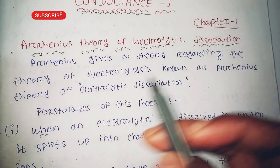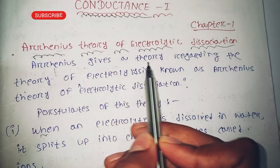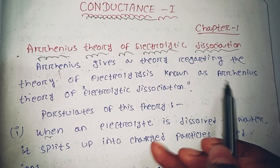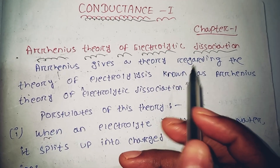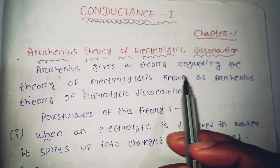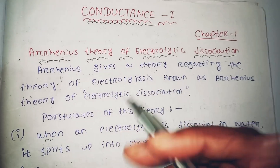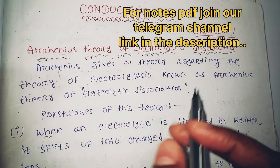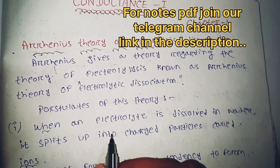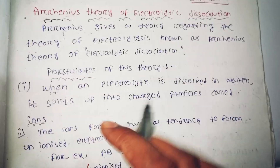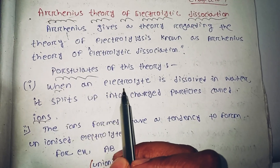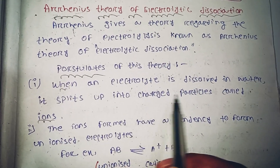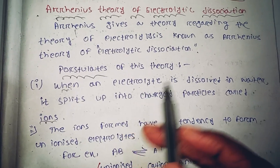This is the most important question. Arrhenius gives a theory regarding electrolysis, known as the Arrhenius theory of electrolysis. When an electrolyte is dissolved in water, it splits up into charged particles called ions.